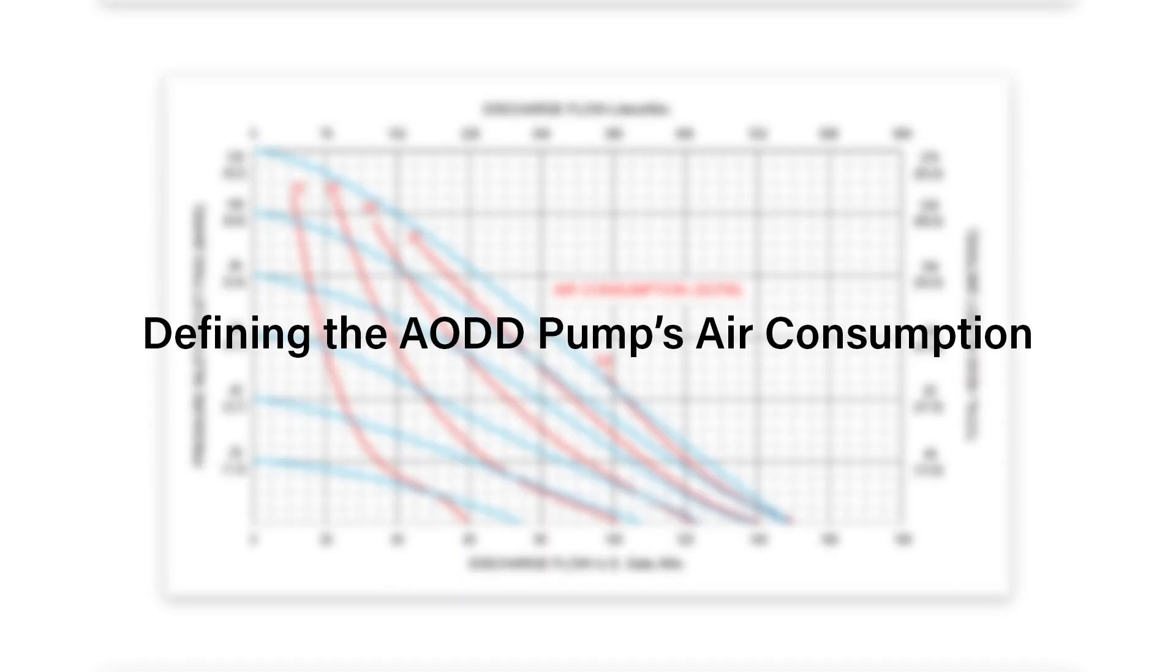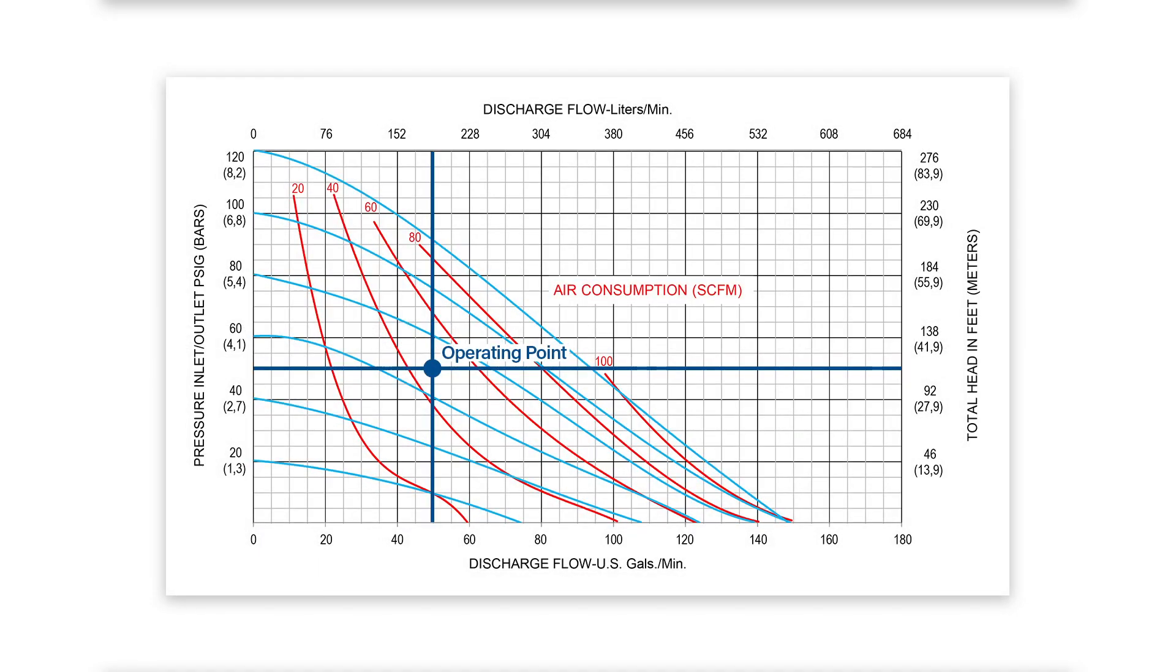The AODD pump performance curve defines the pump's air consumption. Air consumption can be used to help size a compressor for your system as well as identify opportunities for cost savings.